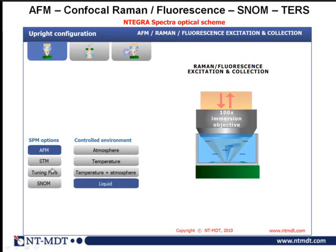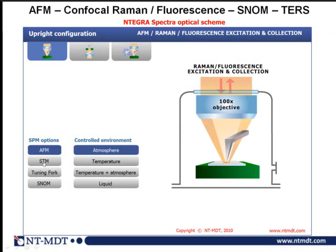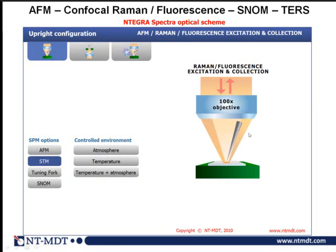An important capability is using different AFM probes. You can see the AFM cantilever under the high-resolution lens, but sometimes you want to use an STM tip instead. If the tip-enhanced Raman probe is an etched metal wire, it can be glued to a tuning fork; the tuning fork works as force feedback for the AFM, so effectively any sharp object can be used as a TERS probe.